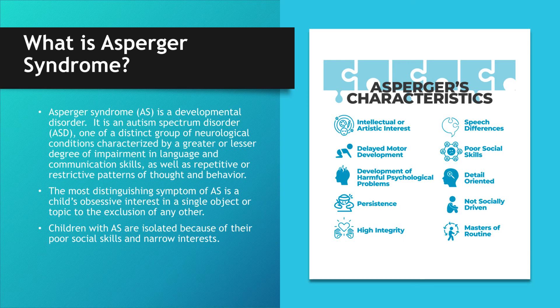Other characteristics of AS include repetitive routines or rituals, peculiarities in speech and language, socially and emotionally inappropriate behavior and the inability to interact successfully with peers, problems with non-verbal communication, and clumsy and uncoordinated motor movements. Children with AS are isolated because of their poor social skills and narrow interests. They may approach other people but make normal conversation impossible by inappropriate or eccentric behavior, or by wanting only to talk about their singular interest. Children with AS usually have a history of developmental delays in motor skills such as pedaling a bike, catching a ball, or climbing outdoor play equipment, and are often awkward and poorly coordinated with a walk that can appear either stilted or bouncy.